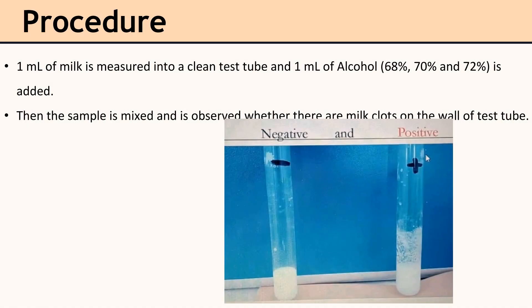Now let's see how to do the alcohol test. One ml of milk is measured into a clean test tube and 1 ml of alcohol is added. We can use 68%, 70%, or 72% alcohol. Then the sample is mixed and observed whether there are milk clots on the wall of the test tube.